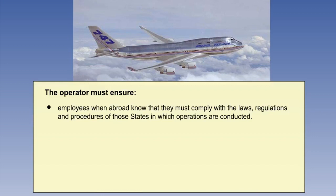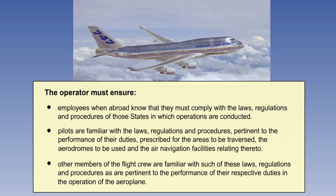Firstly, compliance. The operator has several responsibilities here. He must ensure that all employees — crew, operations, maintenance personnel, etc. — know that they must comply with the requirements of the state in which they are operating and also any other state that affects the operation. Compliance is especially important for pilots, particularly in terms of the route, airports, and navigation aids, but also true for any other member of the flight crew.